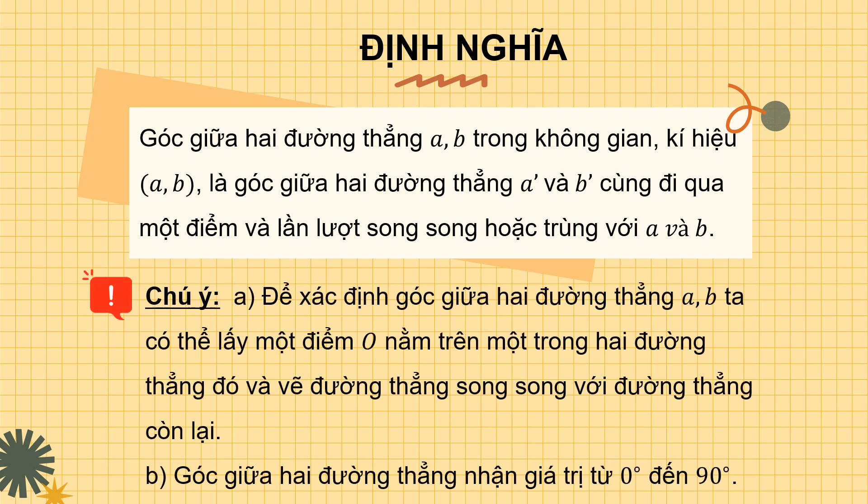Chúng ta có một vài chú ý. Để xác định góc giữa 2 đường thẳng AB, ta có thể lấy 1 điểm O nằm trên 1 trong 2 đường thẳng đó và vẽ đường thẳng song song với đường thẳng còn lại. Lưu ý thứ 2: góc giữa 2 đường thẳng luôn nhận giá trị từ 0 đến 90 độ.